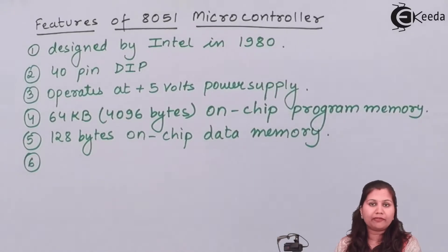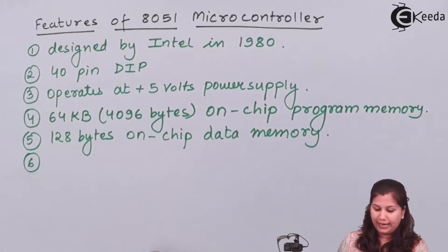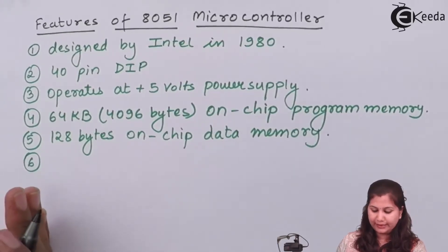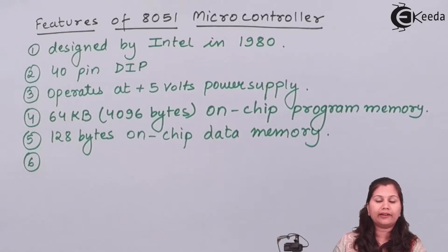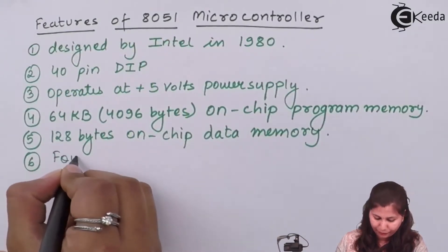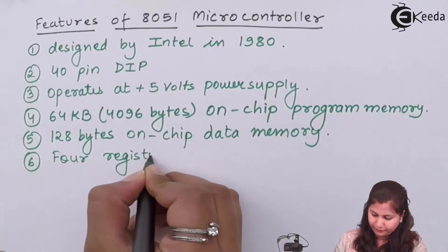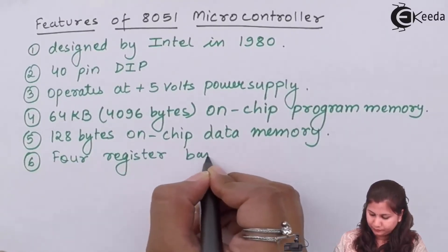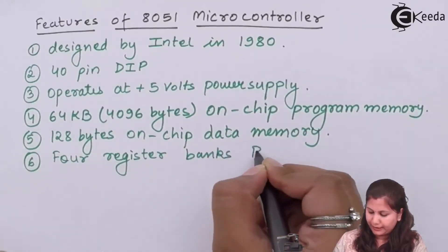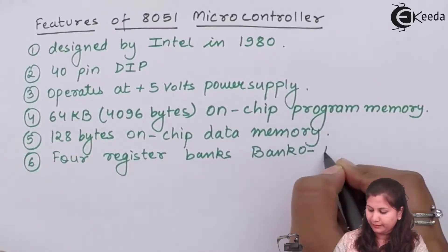The 8051 microcontroller has 4 register banks, from bank 0 to bank 3. These register banks can be used for multiple functions in the programs.